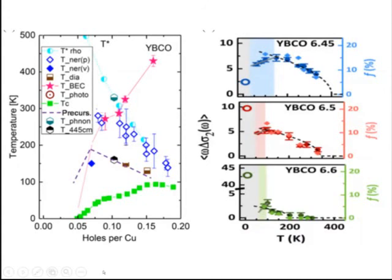In YBCO, we can compare the transient superfluid density measured by Cavalleri's group. They plotted the transient onset temperature versus transient superfluid density compared to the equilibrium superfluid density at lowest temperature. For YBCO 6.6, the onset temperature comes close to the Nernst effect onset. For YBCO 6.5, the onset is slightly different but still close to the Bose-Einstein condensation line. These points were shown in the earlier TC versus TF plot.